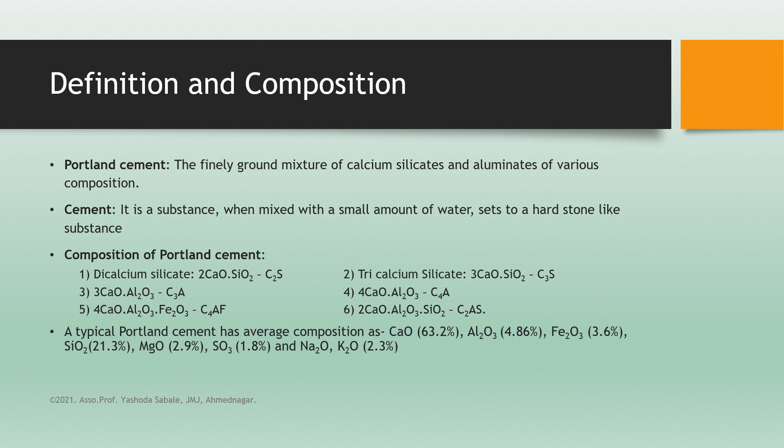The composition of Portland cement. There are six constituents which are mainly present in Portland cement. First, dicalcium silicate, which has formula 2CaO·SiO₂ and is abbreviated as C2S. Then tricalcium silicate, 3CaO·SiO₂, which abbreviates as C3S.